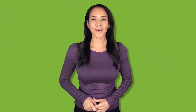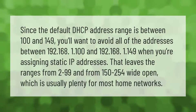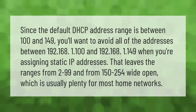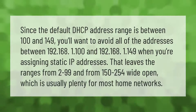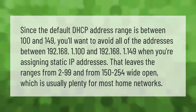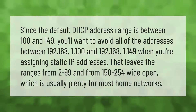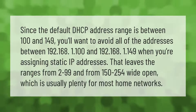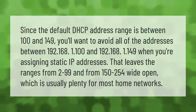Since the default DHCP address range is between 100 and 149, you'll want to avoid all of the addresses between 192.168.1.100 and 192.168.1.149 when you're assigning static IP addresses. That leaves the ranges from 2 to 99 and from 150 to 254 wide open, which is usually plenty for most home networks.